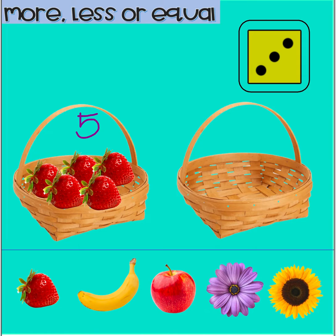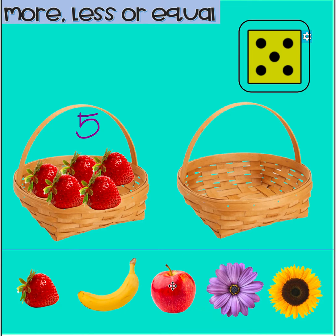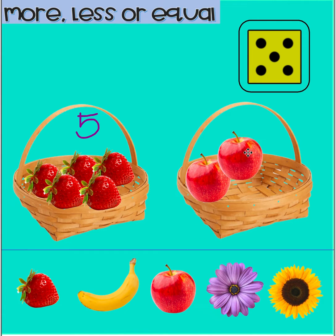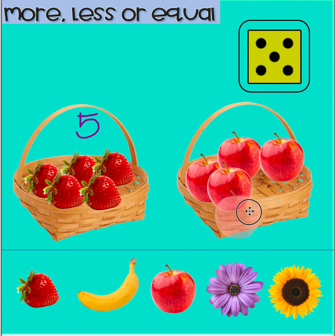Now let's roll another dice to find out how many apples we need to put in the other basket. What number is that? Good job! Five. So that means we have to put five apples in this basket. You ready? Count with me: one, two, three, four, five.